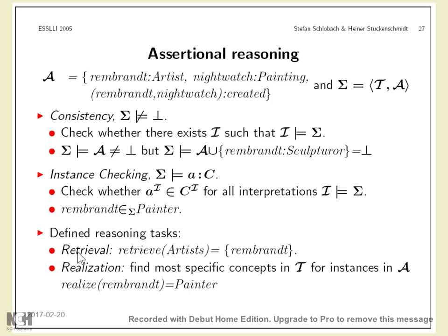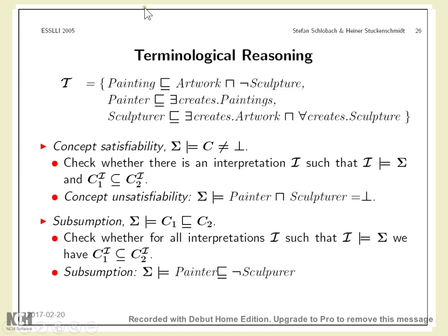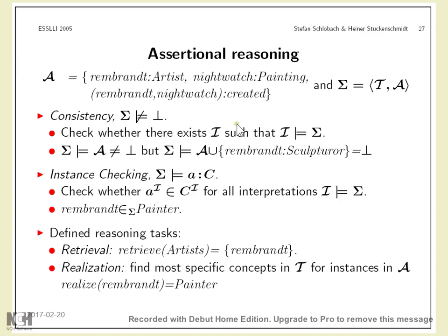Some individuals will be axiomatically linked to the class; we are more interested in whether there are other existing individuals that may logically belong to this class. We make the difference between potential individuals at the class level and already-defined individuals. These are all the kinds of reasoning tasks — four main types: satisfiability of a concept, subsumption of a concept, consistency, and instance reasoning — whether we start from the individual and find the class, or start from the class and find the individuals.